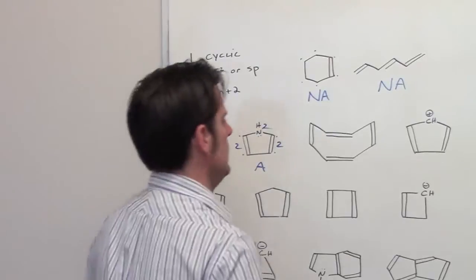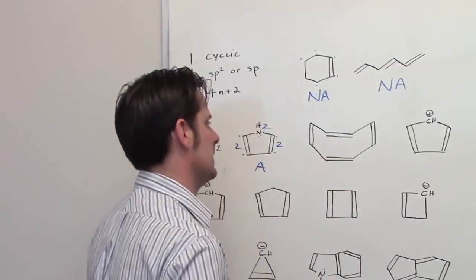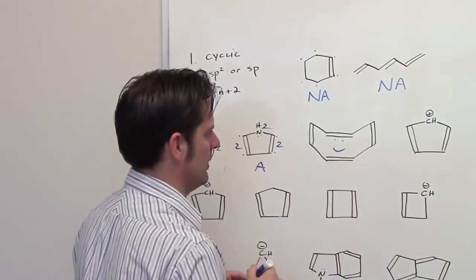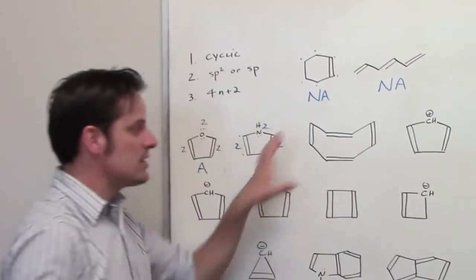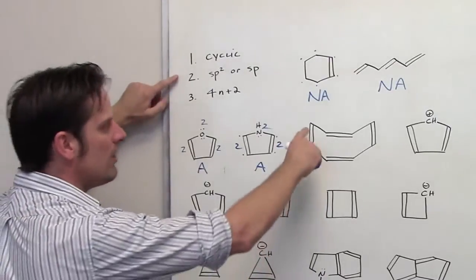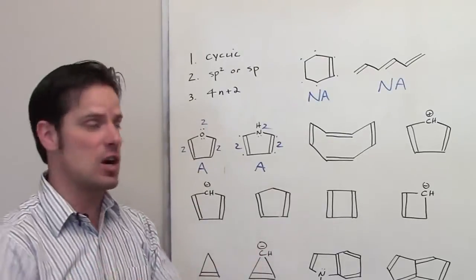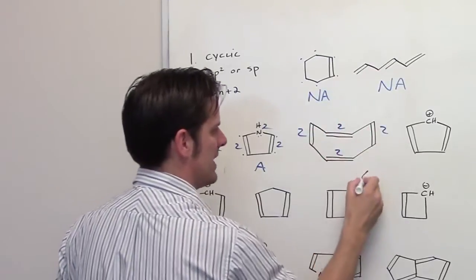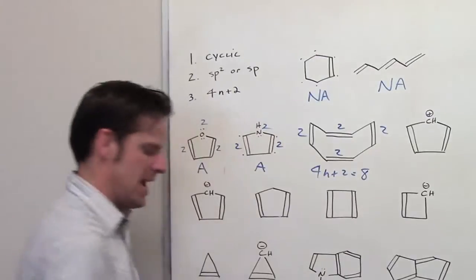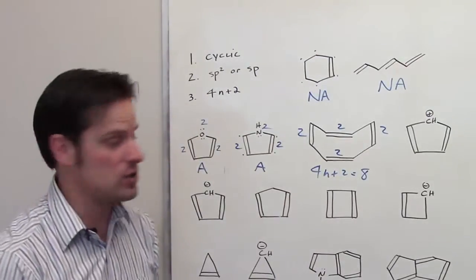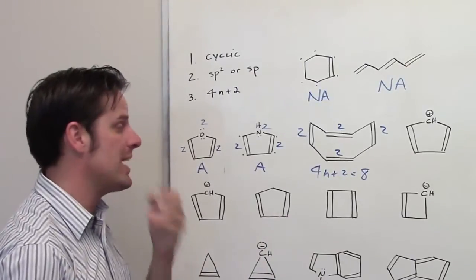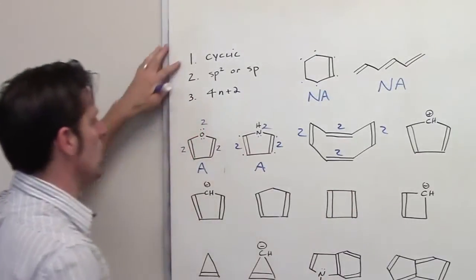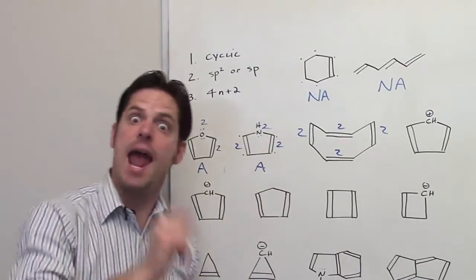Let's look at cyclooctatetraene. Is this molecule cyclic? Yes. Are all of the atoms either sp2 or sp hybridized? Yes, every carbon atom is. How about 4n + 2? Let's count the pi electrons: 2 here, 2 here, 2 here, and 2 here — that equals 8. Can I solve 4n + 2 = 8 for any integer n? No, I can't — there's no integer that gives 8. So this molecule meets criteria 1 and 2, but not 3, which means it is anti-aromatic.